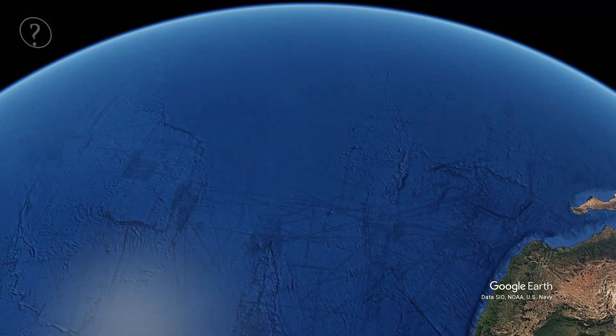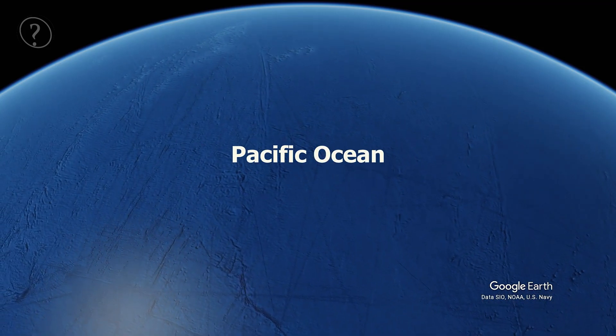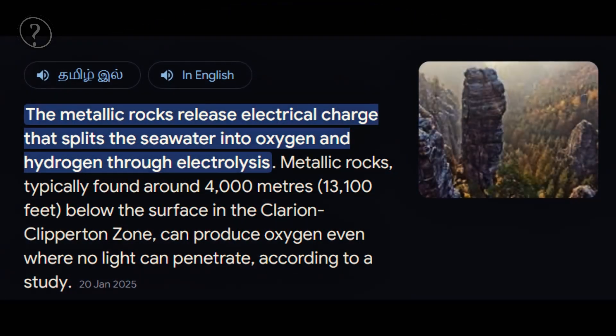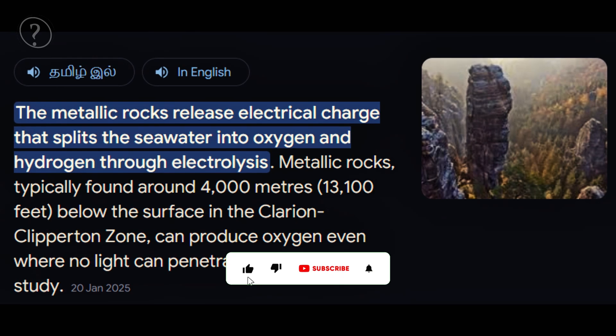But a new discovery in the vast underwater expanse of the Pacific Ocean could rewrite what we thought we knew. According to a recent study, lumpy metallic rocks in the deepest, darkest reaches of the ocean could be producing oxygen.